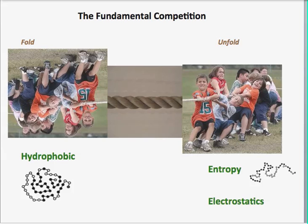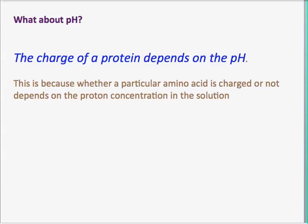And essentially what I'm going to tell you is that when you change the pH, you're enhancing the electrostatic interactions, thus causing the proteins to unfold. And the reason for this is that the charge on the protein depends on the pH. So when I showed you before that some of the amino acids were positively charged, some were negatively charged, it turns out that the amount that they're positively or negatively charged actually depends on the pH.